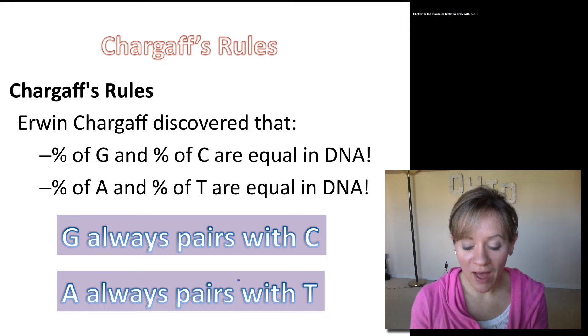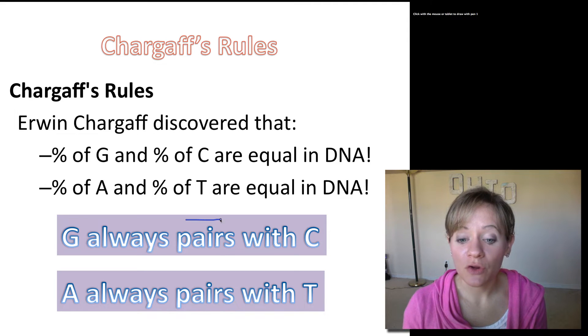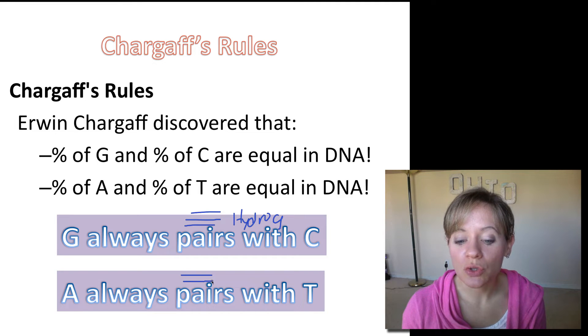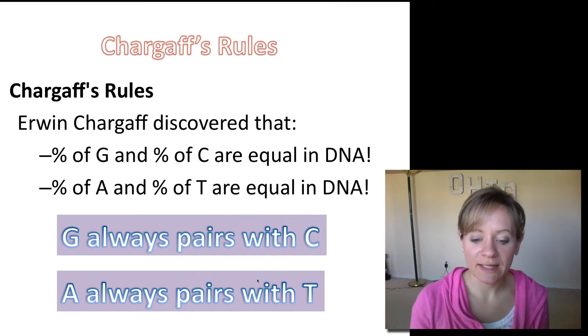So this is really important when we're building this DNA ladder. G is always paired with C, and in fact, I do want you to know that there are three bonds in between G and C, and we're going to learn that these are hydrogen bonds. In between A and T, there are only two hydrogen bonds.